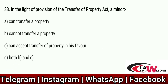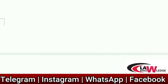Q33: In the light of the provisions of the Transfer of Property Act, a minor — Option A: Can transfer property. Option B: Cannot transfer property. Option C: Can accept transfer of property in its favor. Option D: Both B and C. Correct answer is D. Under the TPA, a minor cannot transfer property but can accept property in its favor.